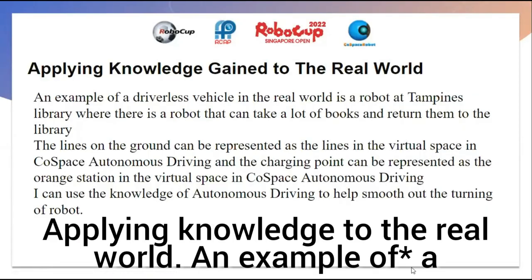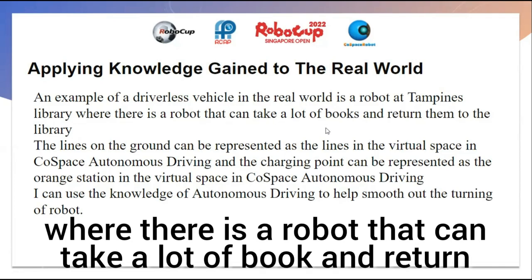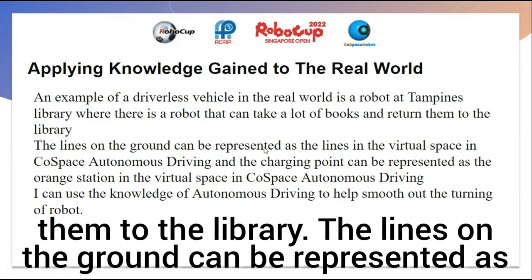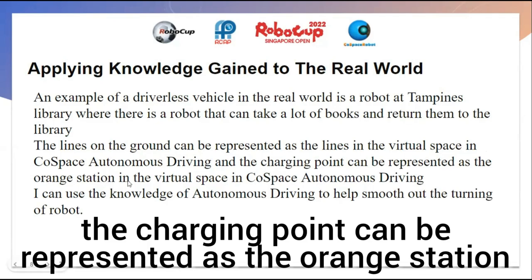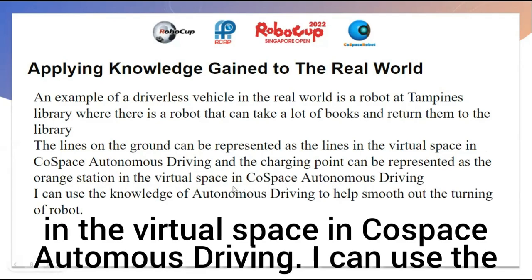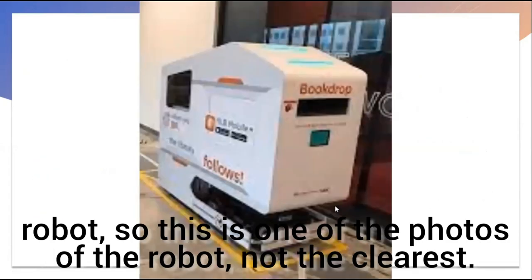Now, applying this knowledge to the real world: an example is a driverless vehicle, specifically a robot at Tampines library that can collect and return books. The lines on the ground can be represented as the lines in the virtual CoSpace Autonomous Driving environment, and the charging point maps to the orange station in CoSpace. I can use the knowledge of autonomous driving to help smooth out the turnings of such a robot. Here is one of the photos of the robot.